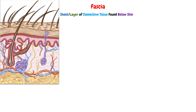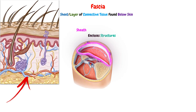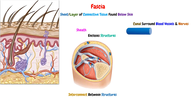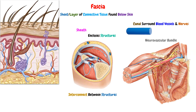The simplest definition we can define the fascia with is that the fascia is a sheet or a layer of connective tissue found below the skin. This fascia will make a sheet that encloses structures like muscles, and interconnects between structures, and also it will make a canal that surrounds the blood vessels and nerves, which is called the neurovascular bundle.